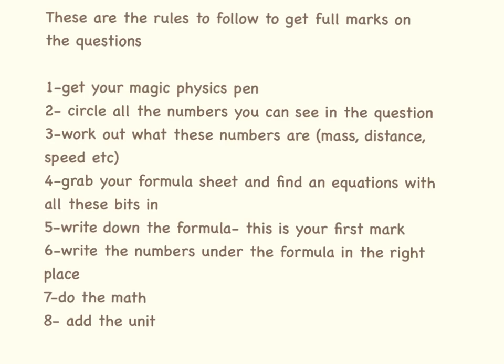You just circle all the numbers you can see in the question. Sometimes they are going to put a lot of words into these Physics questions. You don't necessarily need all of the words. What you need is the numbers. So every time you see a number in the question, just put a big circle around it. And then look at the units associated with this number. Are they mass? Is the number related to mass? Is it related to distance? Is it speed? And then you can get your formula sheets and work out, find an equation that has all these different bits in. I am going to show you examples of this in a couple of videos time.